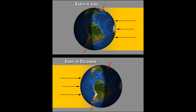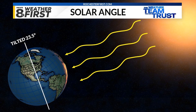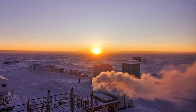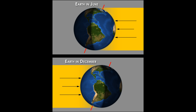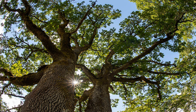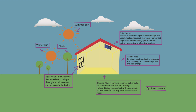The Earth's tilt impacts the distribution of sunlight across different latitudes. During the summer months in the hemisphere tilted towards the sun, sunlight arrives at a more direct angle, leading to longer days and more intense sunlight, resulting in warmer temperatures and the characteristic traits of summer. Conversely, in the hemisphere tilted away from the sun, sunlight arrives at a shallower angle, resulting in shorter days, less intense sunlight, and cooler temperatures. Understanding these variations in sunlight distribution helps us comprehend why seasons change and the impact it has on our climate and environment.